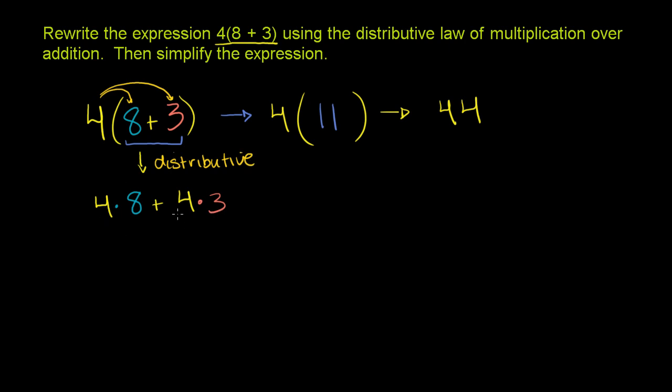And then when you evaluate it—I'm going to show you in a visual way why this works—4 times 8 is 32. So we have 32 plus 4 times 3. 4 times 3 is 12, and 32 plus 12 equals 44.